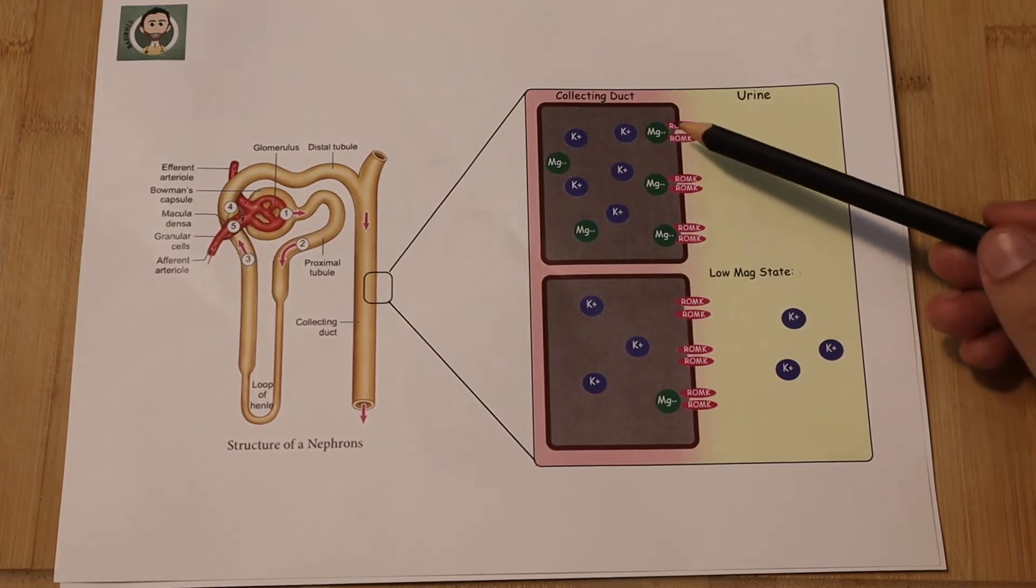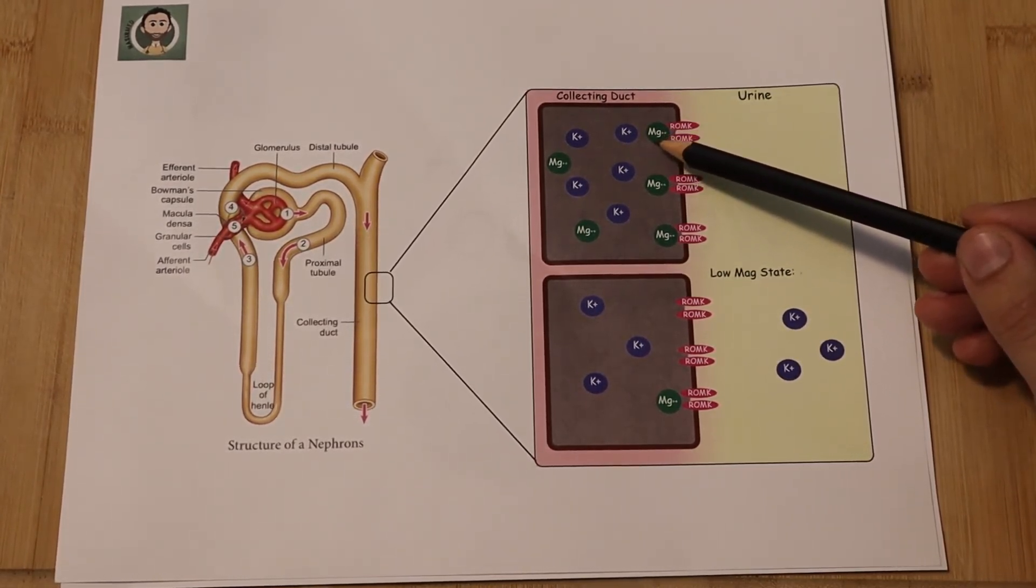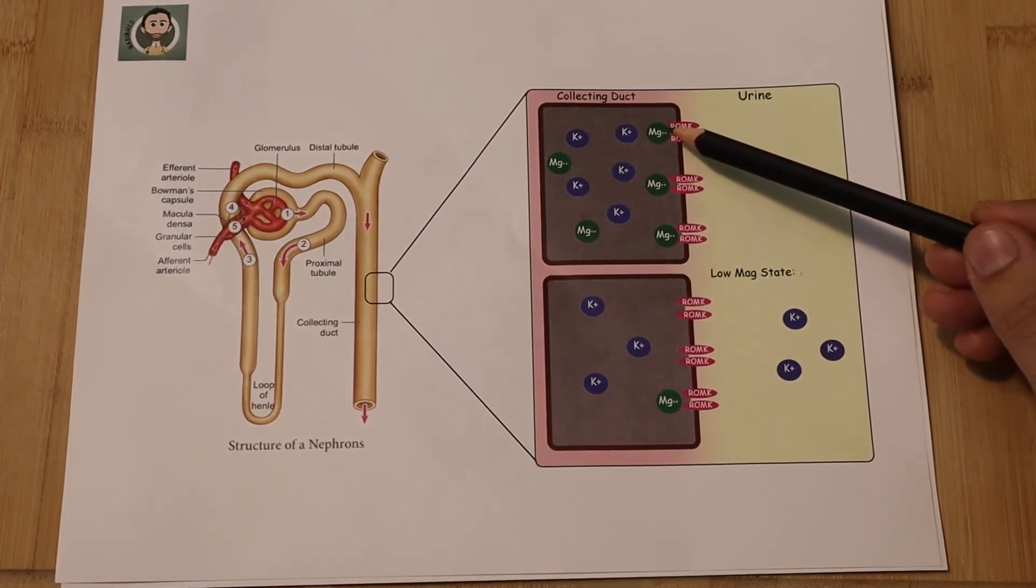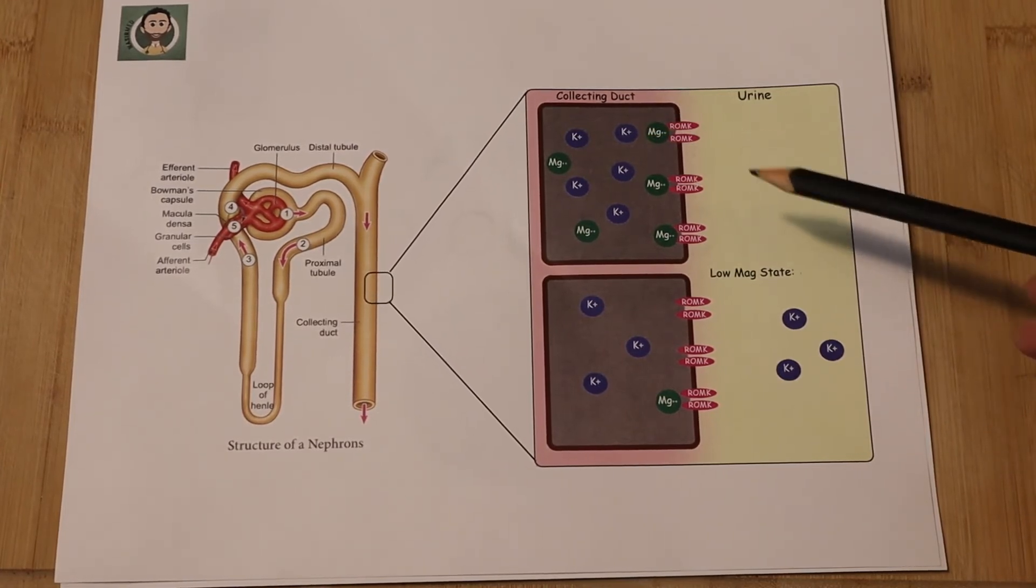So in the normal physiological state where you have enough magnesium ions, those magnesium ions will block those channels and will prevent the efflux of potassium into the urine.